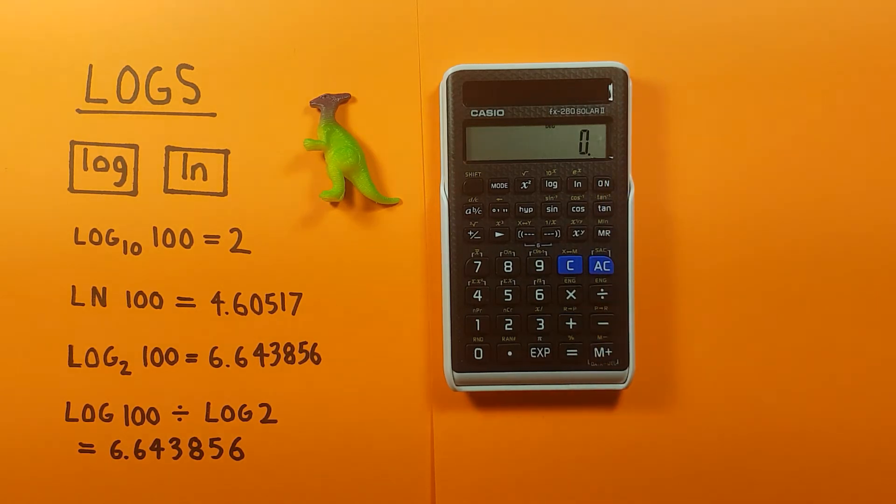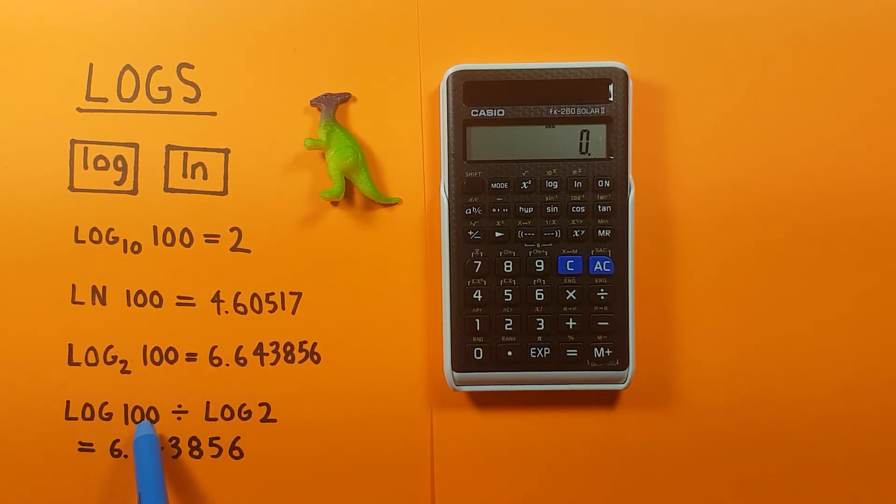But what if we wanted to find a log base that isn't base 10 or natural log? Well to do that we have to use something called the change of base formula, which means we divide the log of the number by the log of the base that we want.